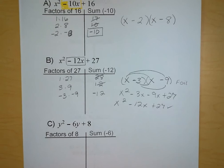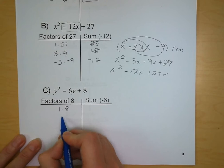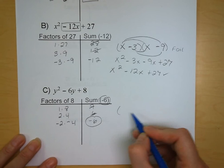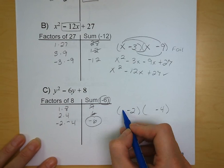Third example: factors of 8 are 1 and 8, 2 and 4, and negative 2 and negative 4. Their sums are 9, 6, and negative 6. We want those two negative terms. Our variable is a y for this one, so we get y minus 2 and y minus 4.